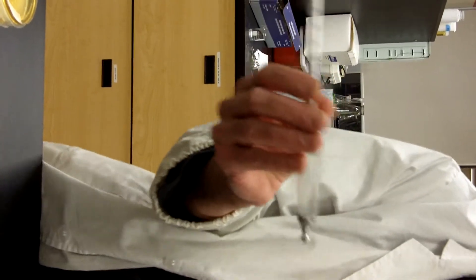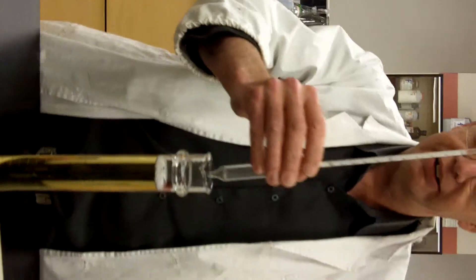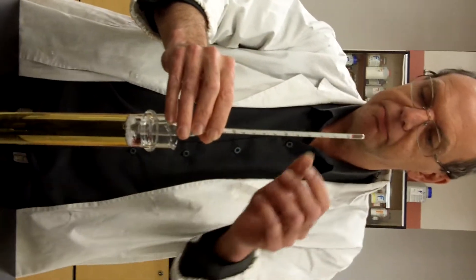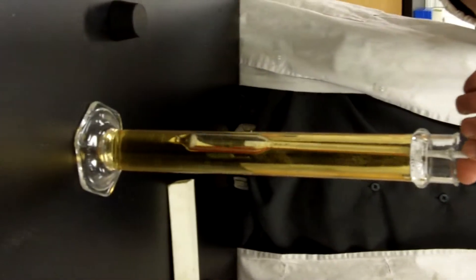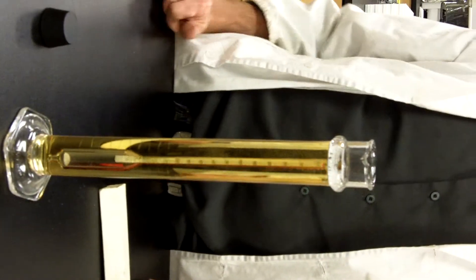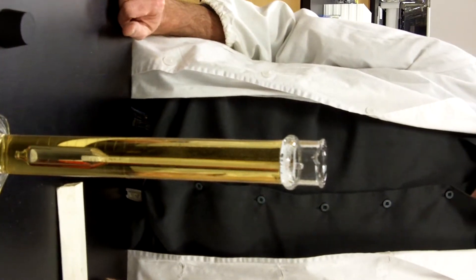So when you're actually placing the hydrometer in the beer, you essentially lower it down. You don't just plonk it down. And you give it a nice little spin. And the spin just to get rid of those residual bubbles.